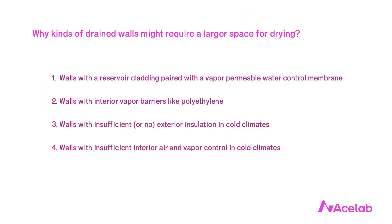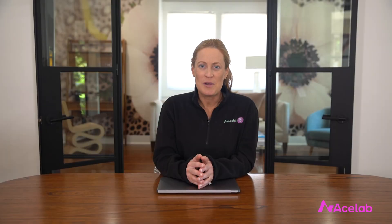You'll note that apart from the first condition — reservoir claddings with a too-open WRB — the other conditions on this list tend to be more typical of cold climate design. For this reason, it's not surprising that Canadians have much more familiarity with larger spaces behind their claddings and have stricter code requirements to that effect. But if we were to eliminate the reservoir cladding, the too-open water control membrane, the interior vapor barrier, and add exterior insulation, or if we were building in a warmer climate, we really wouldn't need a whole lot of space for drainage and drying.